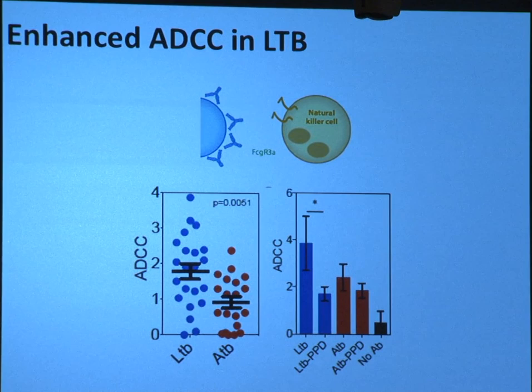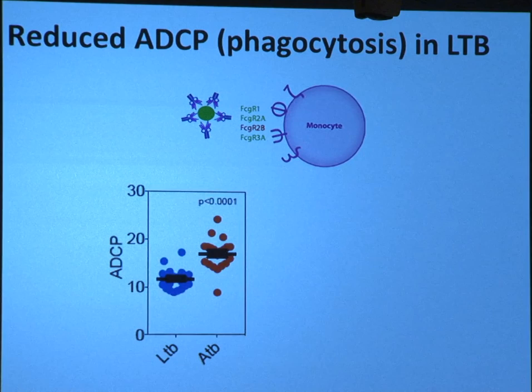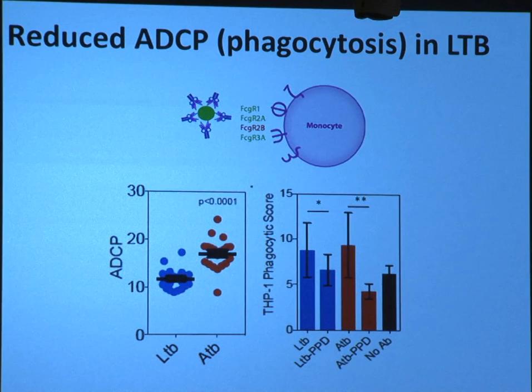We asked whether this was a general feature across all innate immune cells. Looking at monocyte-induced phagocytosis, the picture was completely reversed — antibodies from actively infected individuals formed opsonized complexes that got into monocytes much more effectively, driving very rapid phagocytic clearance. So an inverse functional activity from the two disease states. Again, the activity was antigen specific, and we could deplete the biological activity by removing TB-specific antibodies. There's really something different about the types of antibodies induced in different disease states.